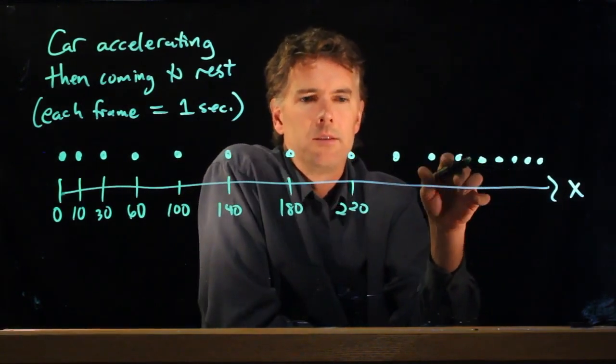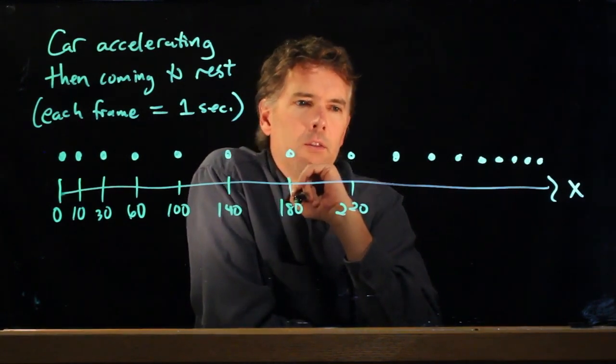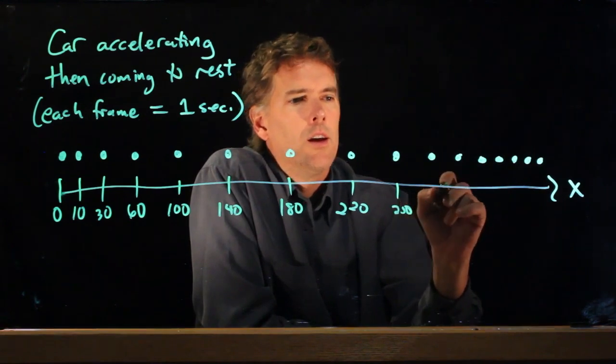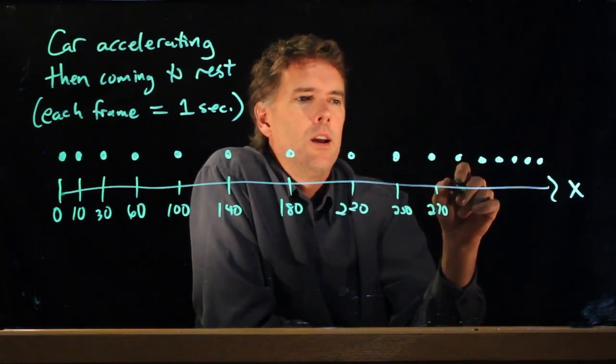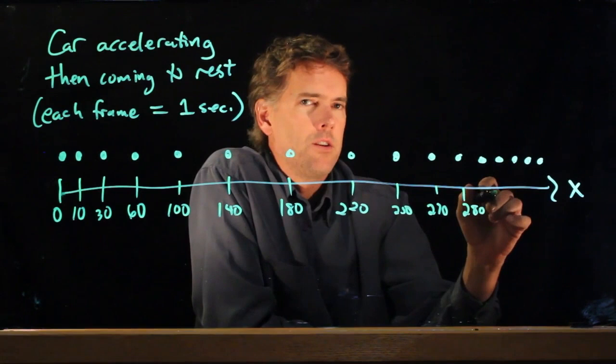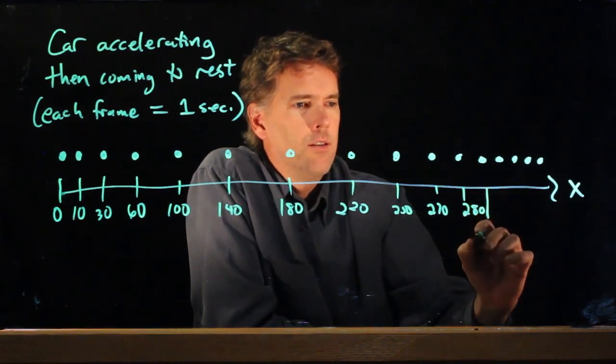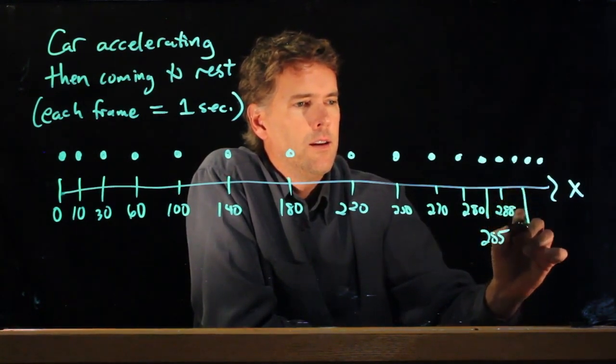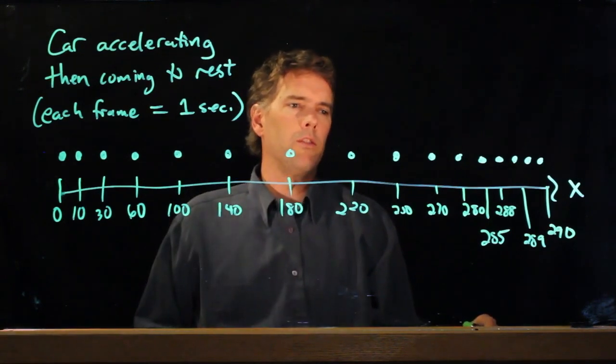And now we're starting to slow down. And so in each time interval, our delta x isn't quite as far anymore. So maybe this is more like 30 again. So 220 plus 30 is 250. And now this is maybe like 20, so this would be 270. And maybe this is more like 10, so that's 280. And now we really start to sort of slow down rather quickly. This is maybe 285, 288, 289. And let's just pick an ending point. We'll say it's 290.